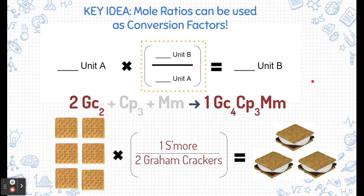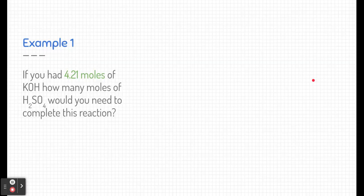Now this is a very simple explanation. Let's try this with something a little more complicated — an actual reaction. Here's our first example: if we had 4.21 moles of potassium hydroxide, how many moles of sulfuric acid would you need to complete this reaction? This is a stoichiometry problem because we're comparing the quantities of different parts of a reaction.